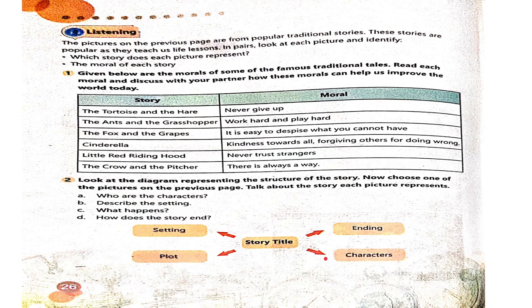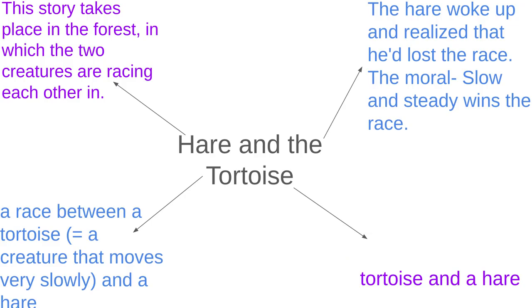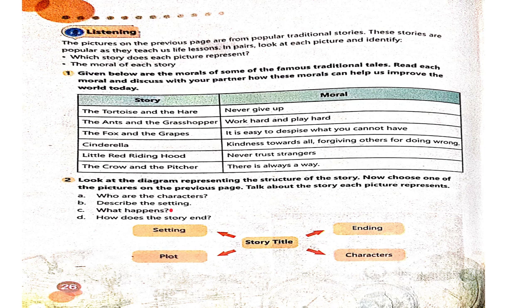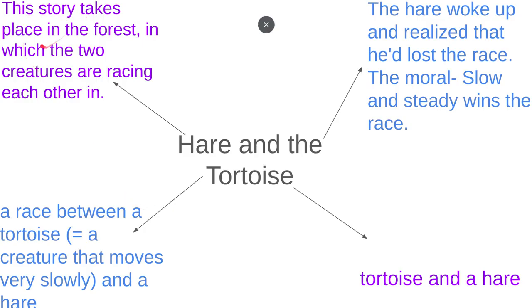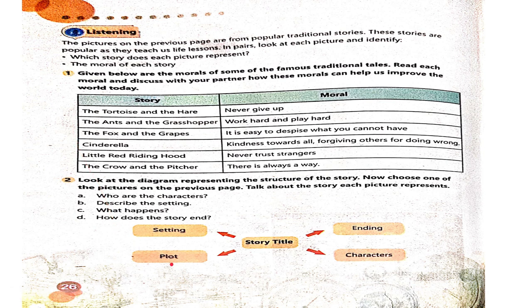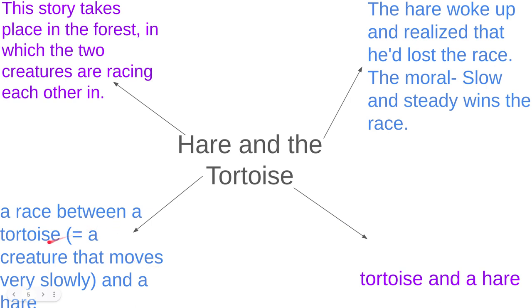I am going to choose the last story: The Hare and the Tortoise. The title of the story is The Hare and the Tortoise. Its setting is that this story takes place in a forest, in which the two creatures — the hare and the tortoise — are racing each other. The plot is a race between a tortoise and a hare. A tortoise is a creature that moves very slowly.